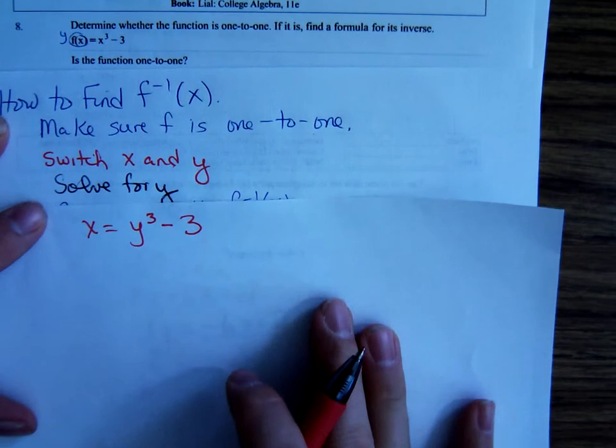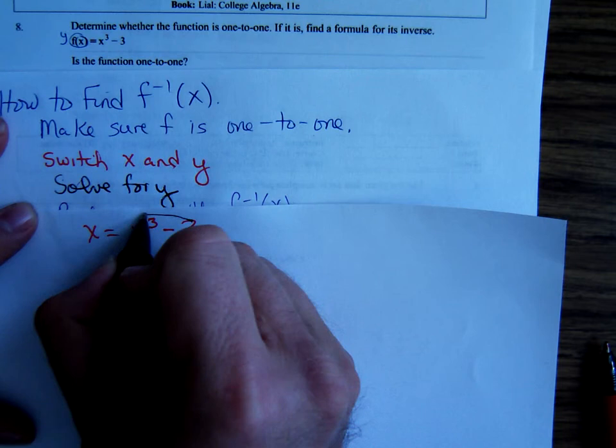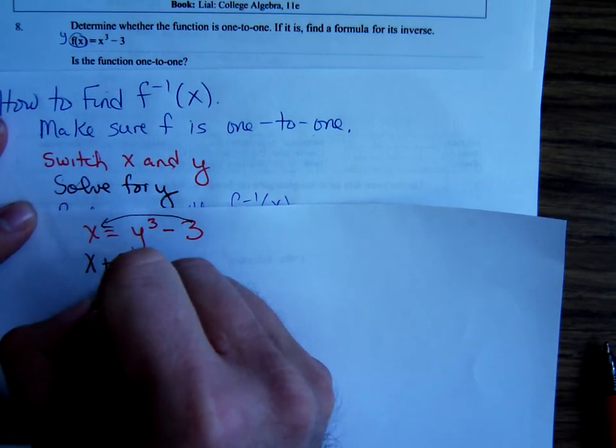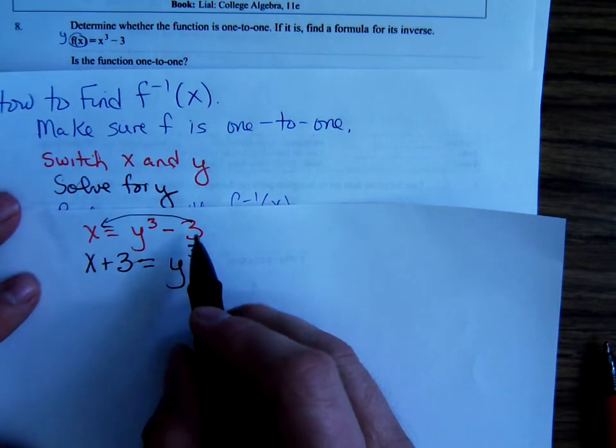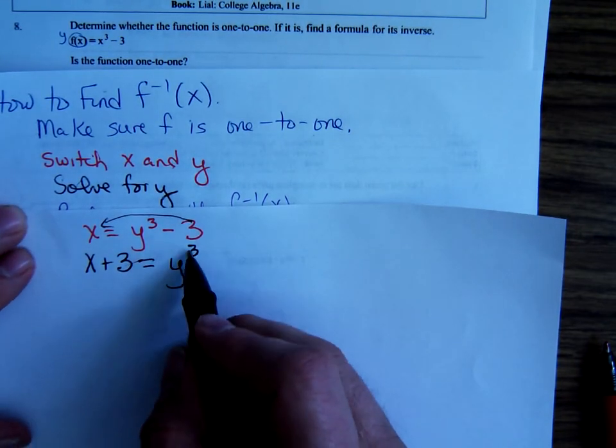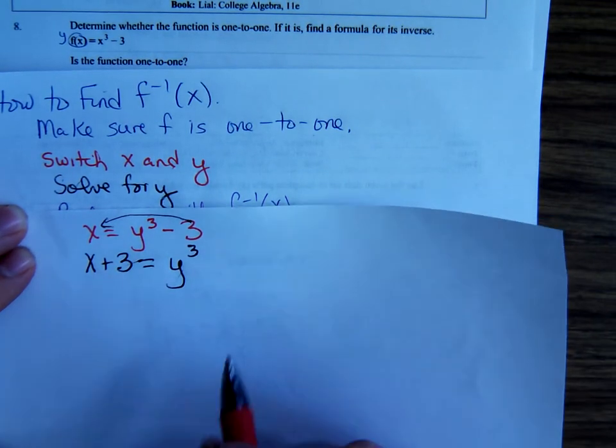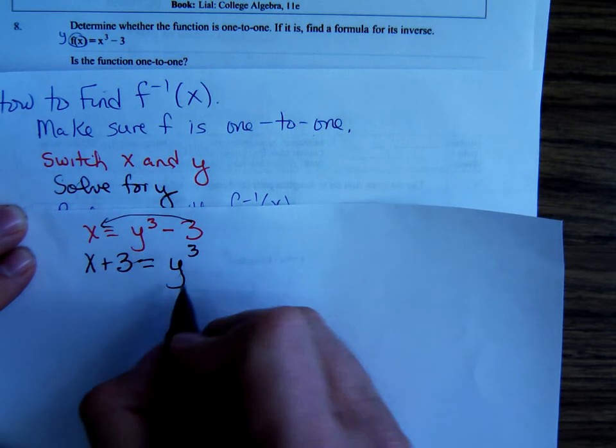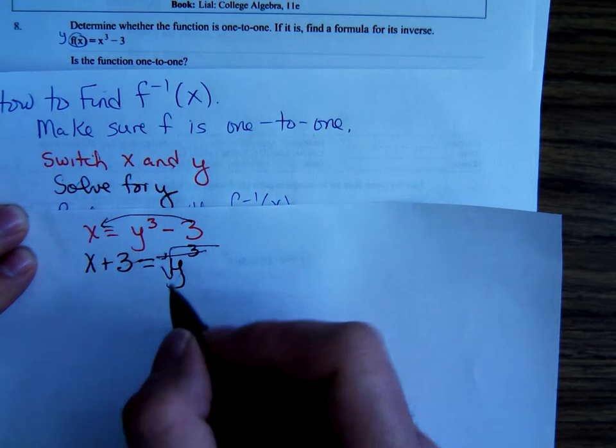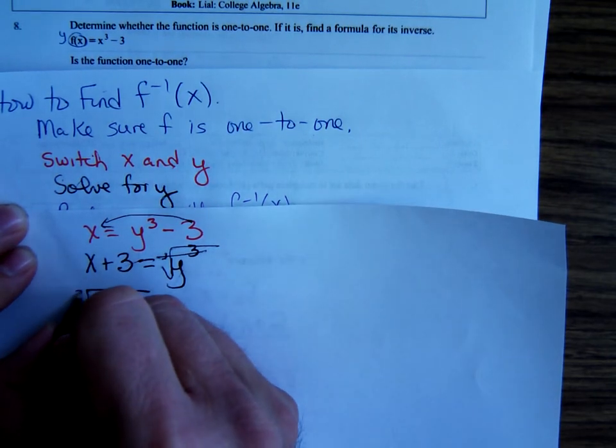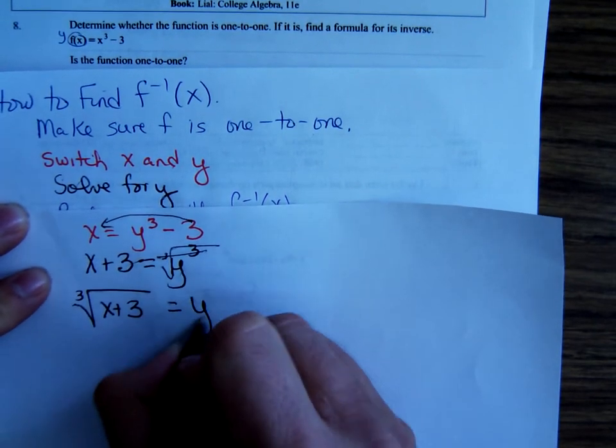Now, solve for y. Well, to solve this thing for y, I'm going to go ahead and move the three over. And, this semester, if we had a three, what then does an exponent of three, what will get rid of that? Yes. Cube root. So, we take a cube root. Let me just. The cube root and the cube will cancel. So, we have cube root of x plus three on the left. And, just a y on the right.